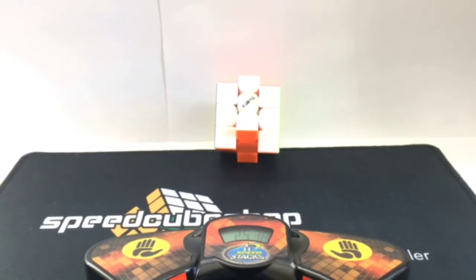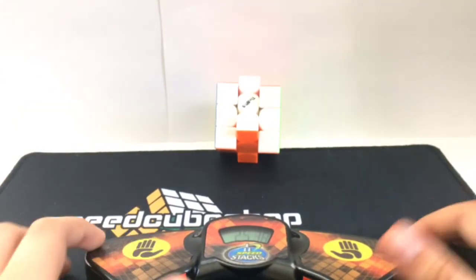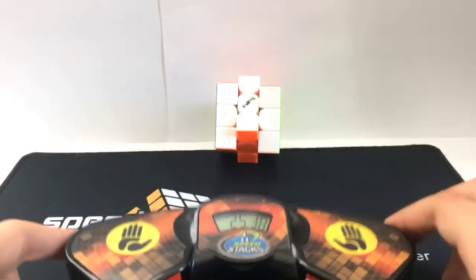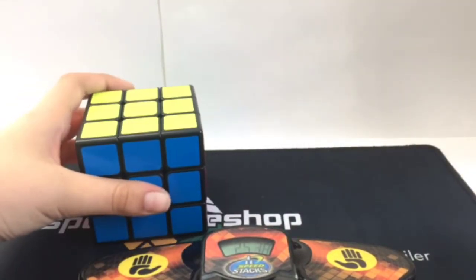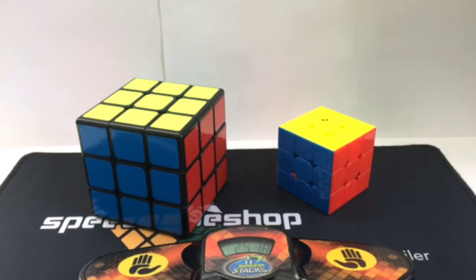Alright, so I finished solving the mini cube and the time that I got was 25.38, so I got about 2 seconds less than the Shang Shao Big Legend. So what I learned today was that you can get better times using a smaller cube than a bigger cube.